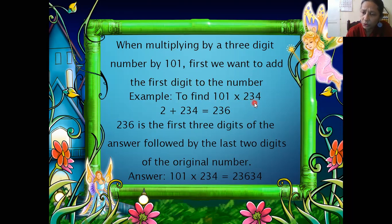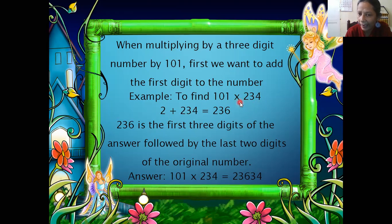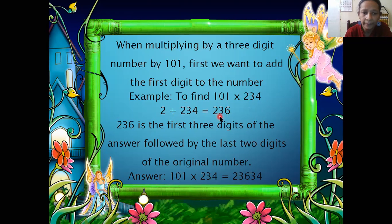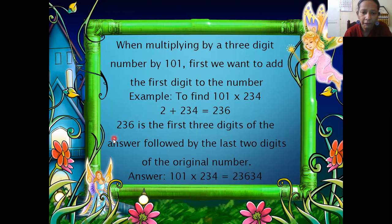In 234, what is the first digit? The first digit is 2 — this is very important, you underline this. The entire number is 234. So you have to add 2 plus 234, which equals 236. That number is now changed — 236 are the first three digits of the answer.